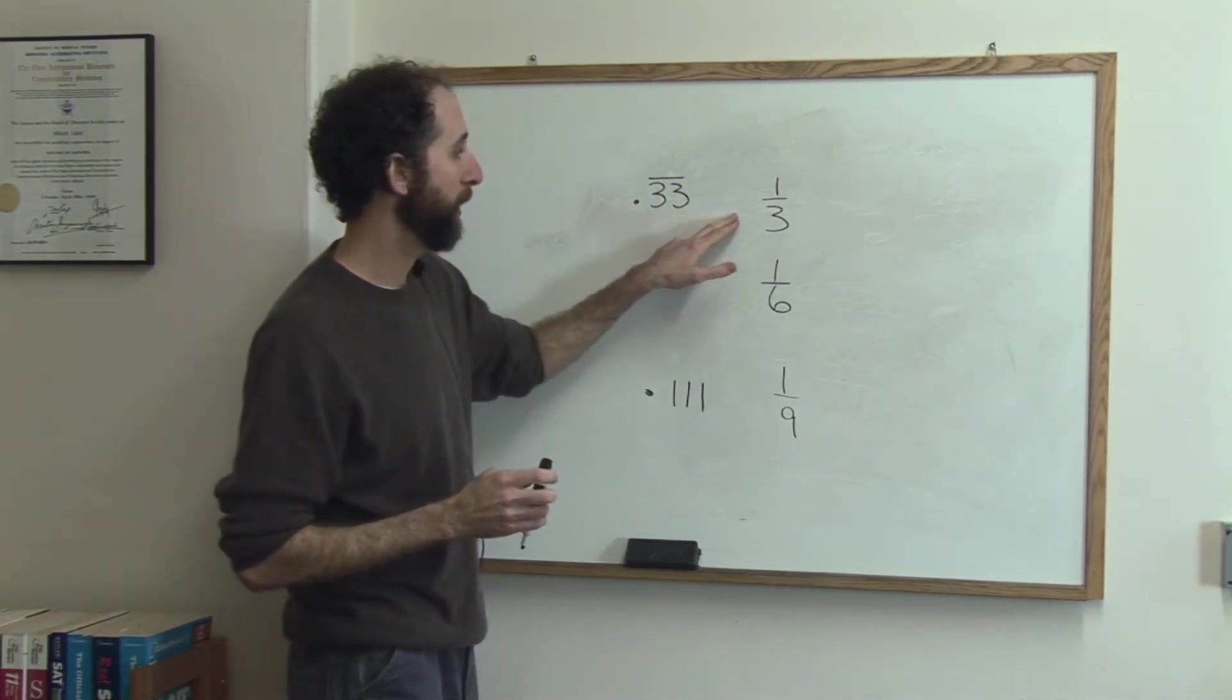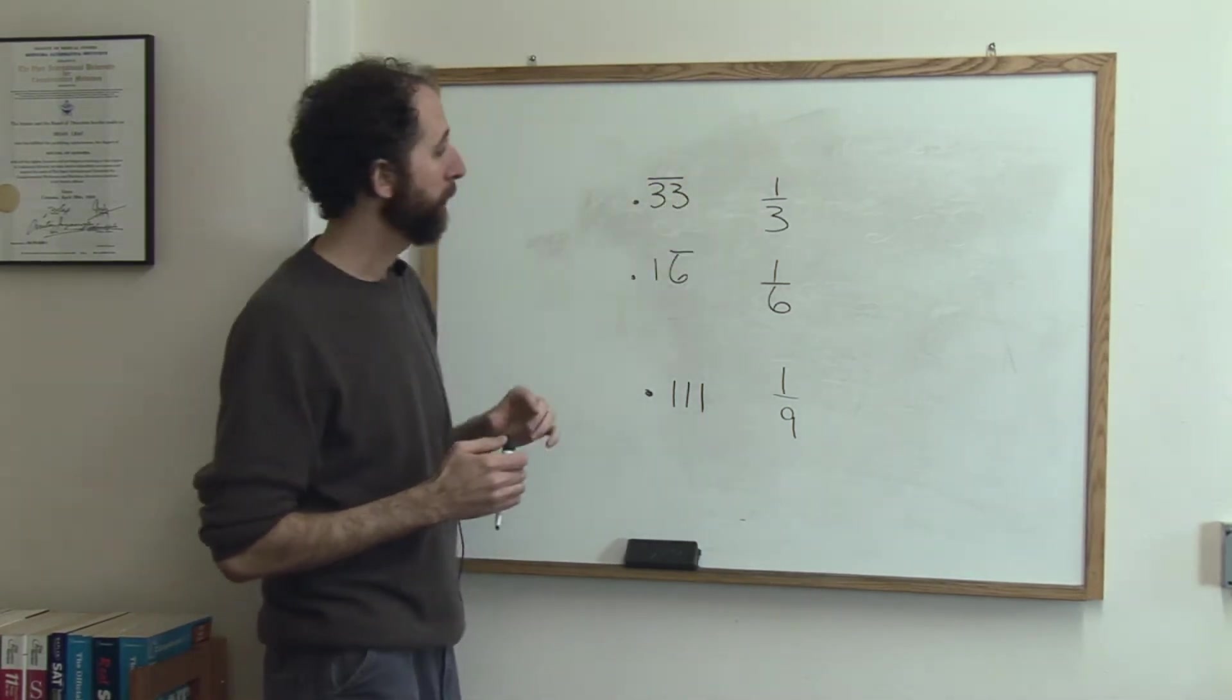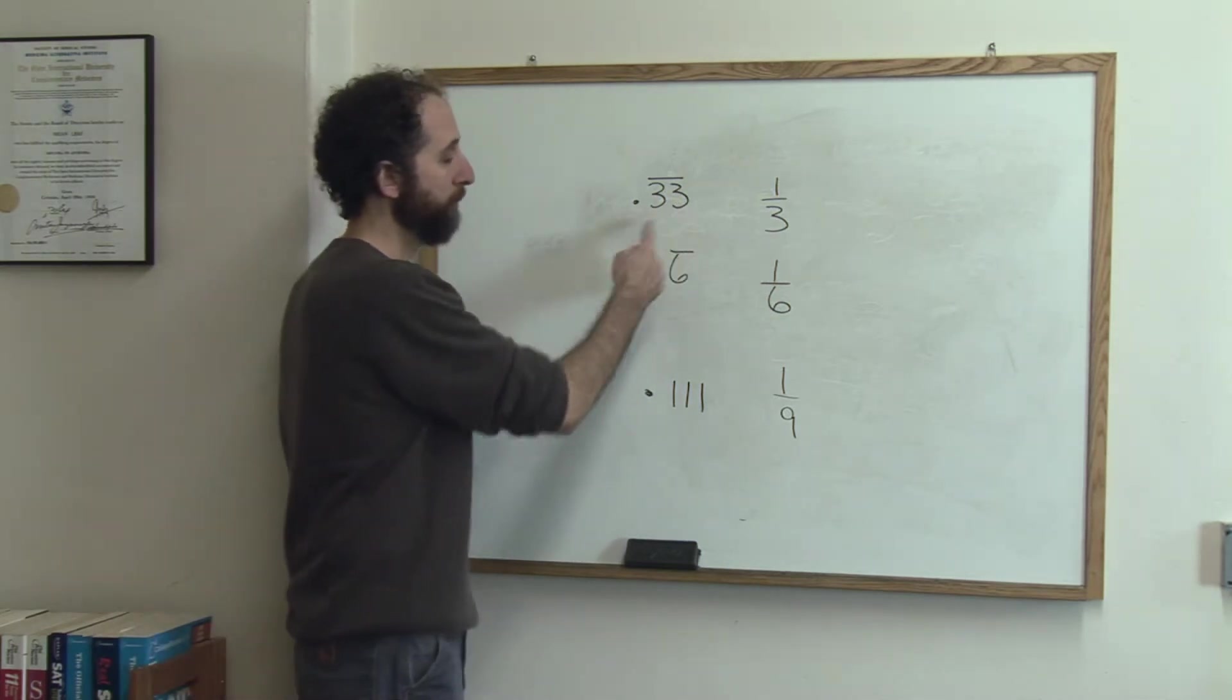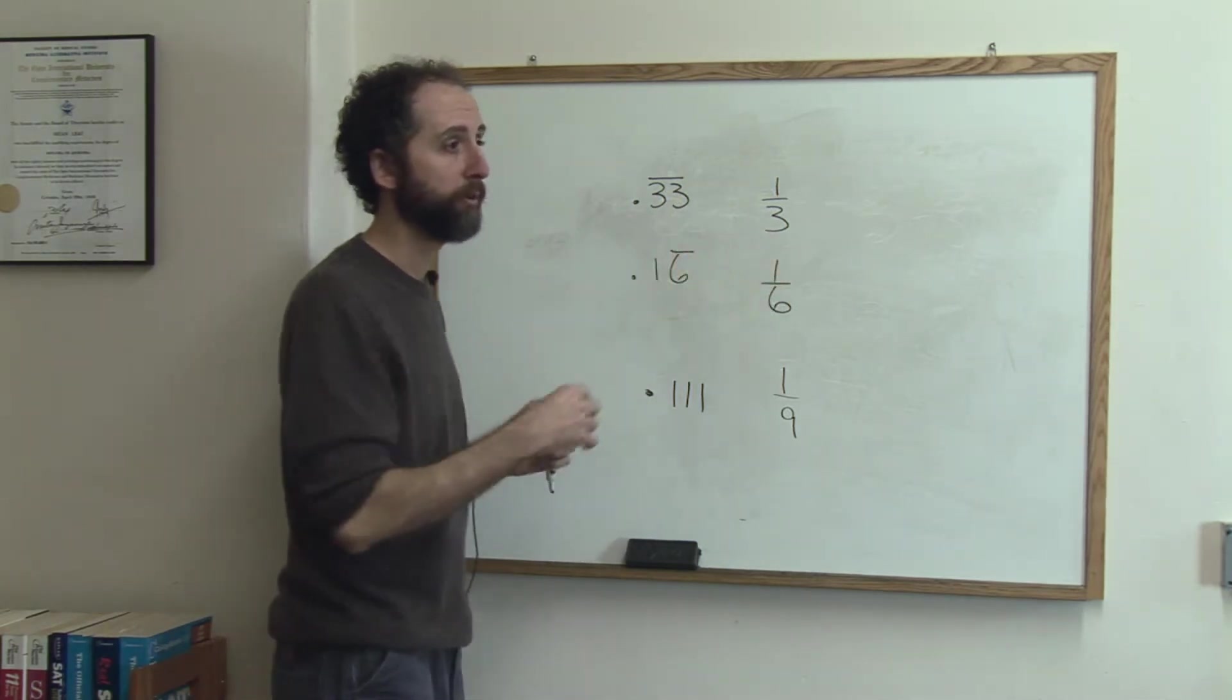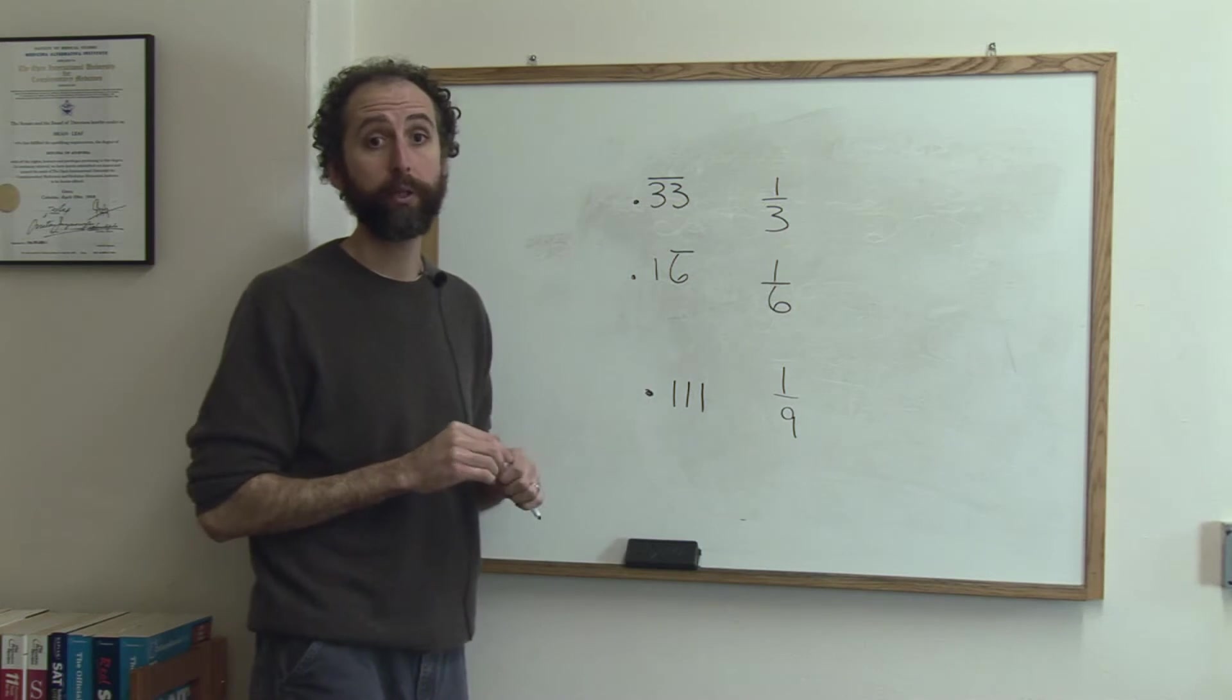So .3333 repeating is one-third. So that's because .3333 if you kept going, it's exactly one-third, literally, of one.